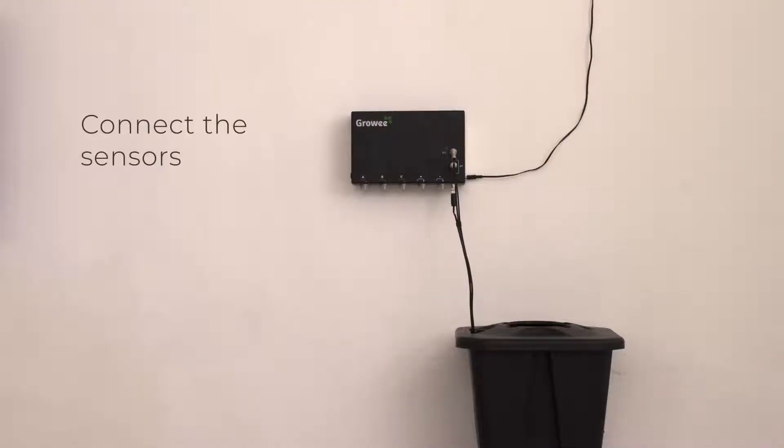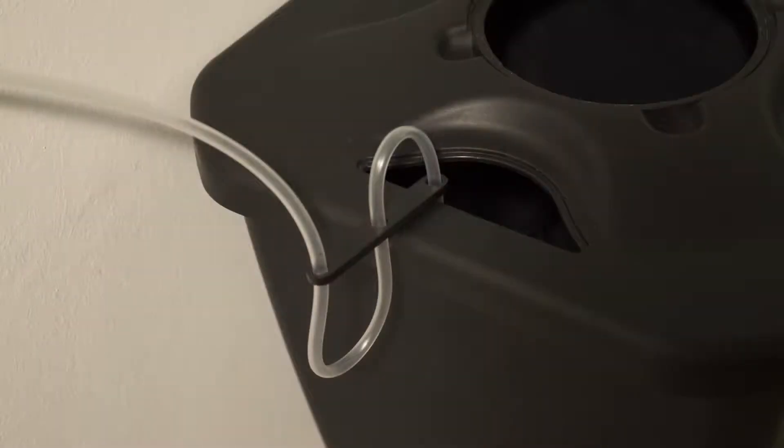Connect the sensors and put them in the water. Connect the out tubes. Use the tube bends to place them on the edge of the water reservoir. Make sure that the tubes are not in contact with the water.